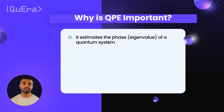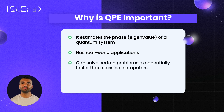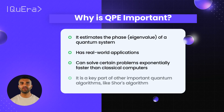It is important because it has real-world applications, like helping calculate the ground state of molecules for drug discovery. It can solve certain problems exponentially faster than classical computers, and it's a key part of other important quantum algorithms, like Shor's algorithm for factoring large numbers.